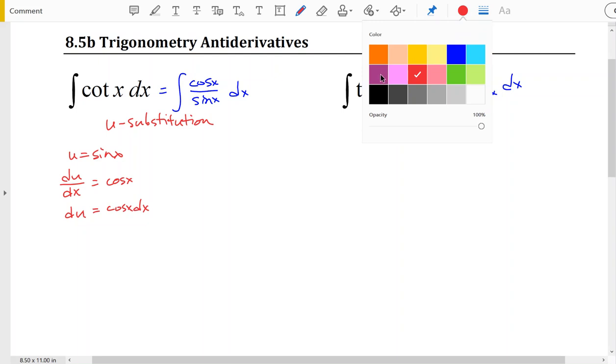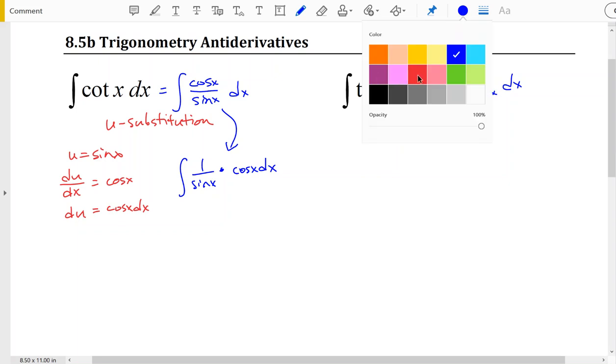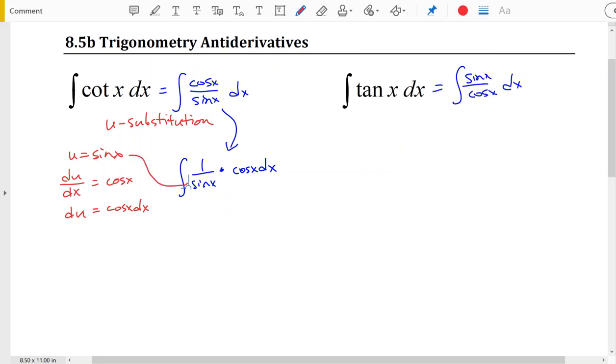Now to make sure that we accurately substitute, let's make sure we recognize that our original function can be rewritten as 1 over sine of x times cosine of x dx. So for 1 over sine of x, I can replace the sine of x with u, giving me 1 over u. And we can replace the cosine x dx with du.